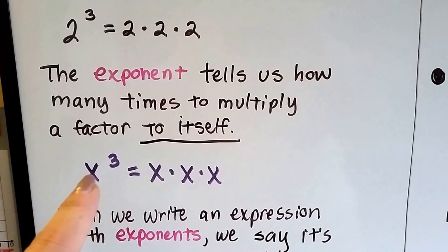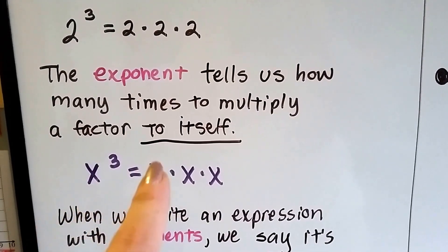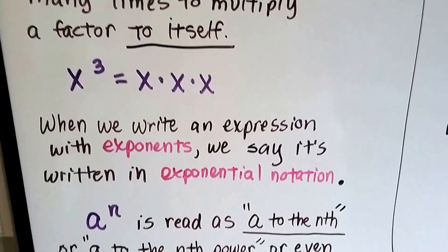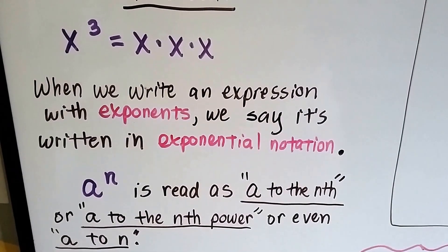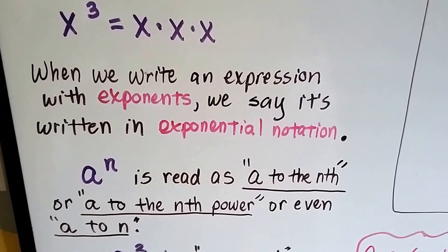And if we had x as a variable to the third power, it means x times x times x. And when we write an expression with exponents, we say it's written in exponential notation.